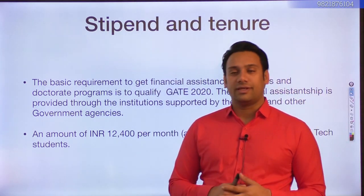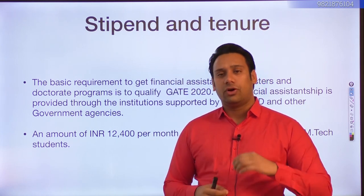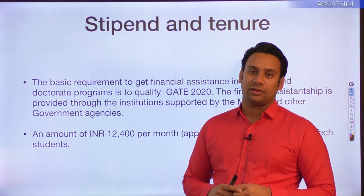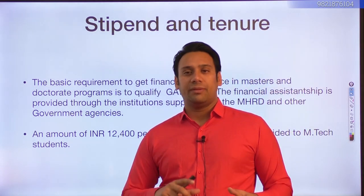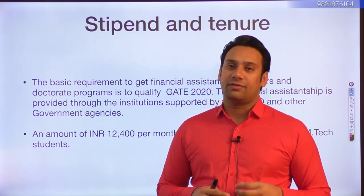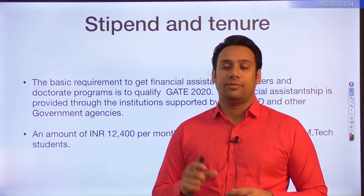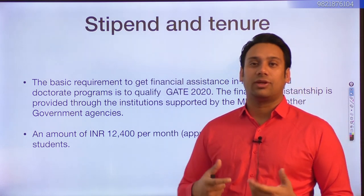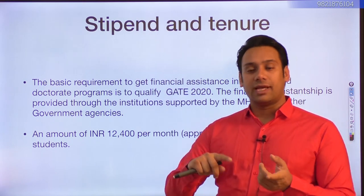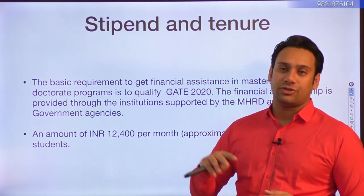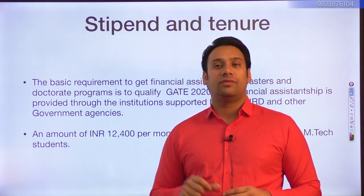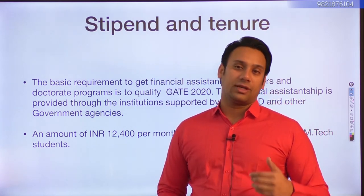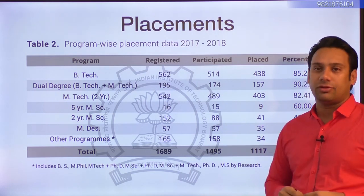If you qualify GATE and take admission in any AICTE-approved IIT or college based on your rank, you get a stipend of Rs. 12,400 per month issued by MHRD. For M.Tech, which is two years, you receive this stipend for the full duration. In other programs like Research Assistant (RA), the stipend can be higher and the duration can be extended to three years.